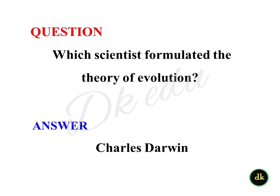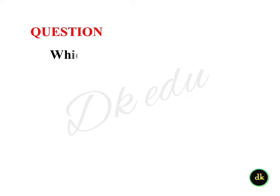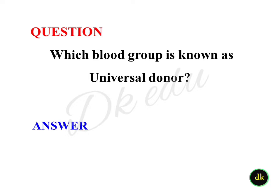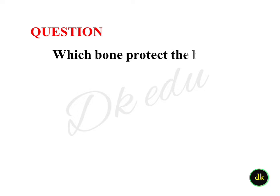Which blood group is known as the universal donor? Answer: Group O. Which bone protects the brain? Answer: Skull.